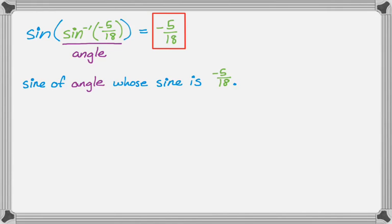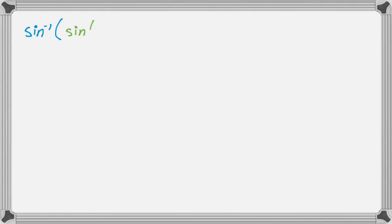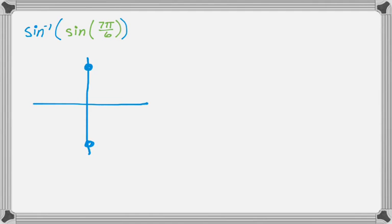More interesting questions are when you have the inverse function on the outside. So let's look at a problem like that. We want to find the inverse sine of the sine of 7π over 6. I'm going to do this in a way that's more applicable to general problems, and then in a more direct way. Since I see inverse sine, I'm going to draw the half of the unit circle I'm allowed to think about — only quadrants 1 and 4, with angles from negative π/2 to π/2. The problem is that 7π over 6 is not in that range; it's in quadrant 3.